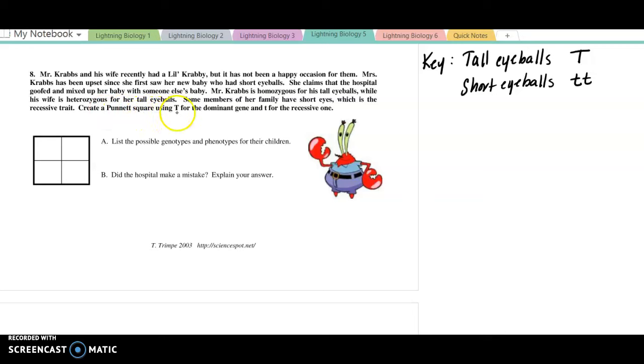We know that the baby they're taking home has short eyeballs. Some of the members of her family have short eyes, which is the recessive trait. Create a Punnett square using dominant T for dominant gene and the lowercase T for recessive gene. Mr. Krabs is homozygous for tall eyeballs. So Mr. Krabs is big T, big T. While his wife is heterozygous for her eyeballs. So she has tall eyeballs, but she is heterozygous, so she has one of each. If indeed Mr. Krabs is homozygous, then we go ahead and we fill in. So Mr. Krabs only has the dominant allele to give. Mrs. Krabs could give the dominant or the recessive.